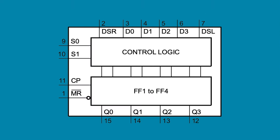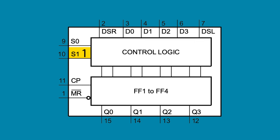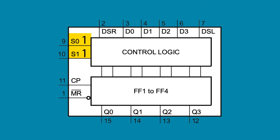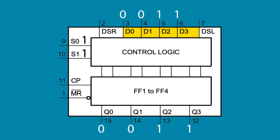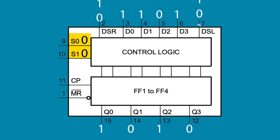S0 and S1 each enable one of the serial inputs, or together can enable the parallel inputs. In serial mode, when S0 is high, serial input DSR is enabled and any data at that input shifts left to right through the registers to the outputs. When S1 is high, serial input DSL is enabled and any data coming in DSL is shifted right to left through the registers to the outputs. When both S0 and S1 are high, the chip is put in parallel mode, with data at D0, 1, 2, and 3 shifted to corresponding outputs Q0, 1, 2, and 3. Both S0 and S1 going low effectively disables all inputs, so the outputs will not change regardless of input data.